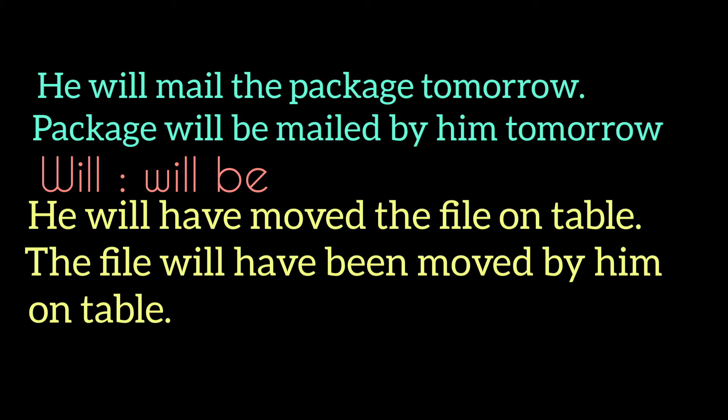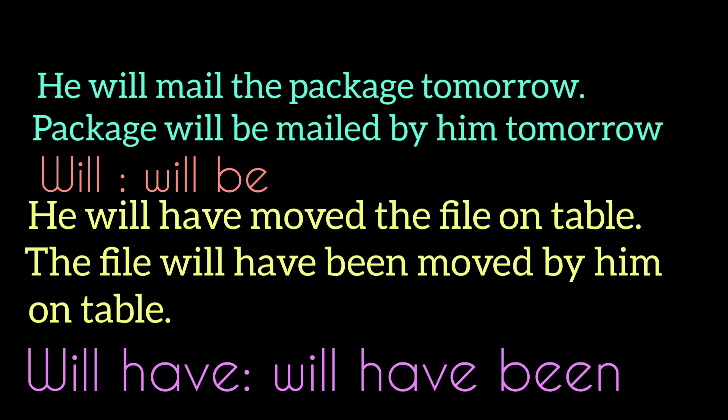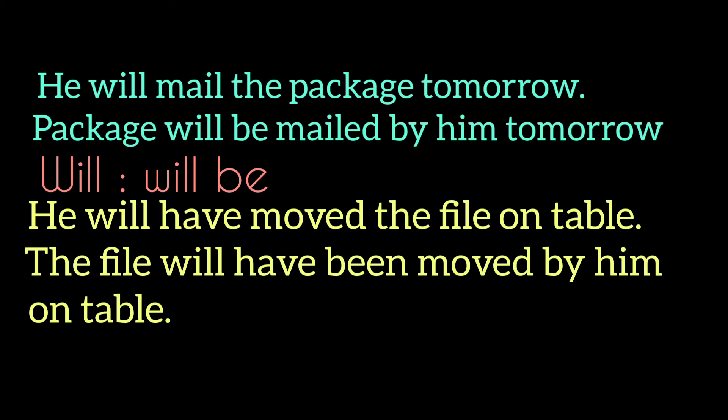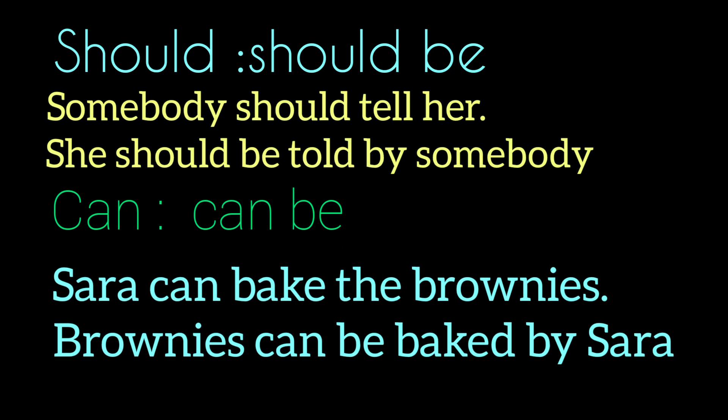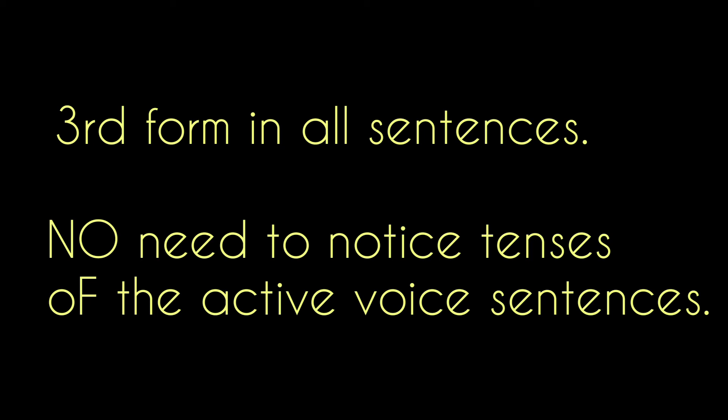Next: 'He will have moved the file on the table.' Passive voice: 'The file will have been moved by him on the table.' 'Will have' is changed into 'will have been'. Next: 'should' is changed into 'should be'. Example: 'Somebody should tell her.' Passive voice: 'She should be told by somebody.' Next: 'can' is changed into 'can be'. Example: 'Sarah can bake the brownies.' Passive voice: 'Brownies can be baked by Sarah.' Notice that in all these sentences the third form is used.